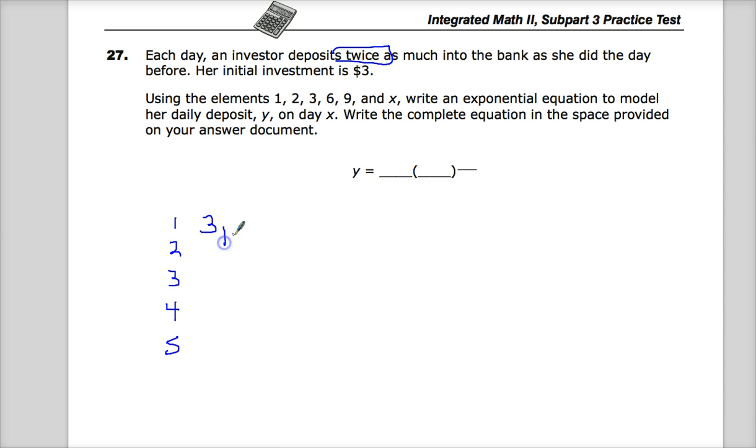So 3 times 2 is 6, 6 times 2 is 12, 12 times 2 is 24, and then we want to know what it is in x. I don't need to do 5, I think you get the point.